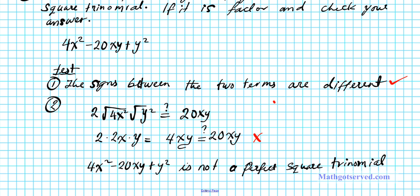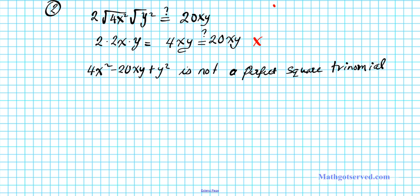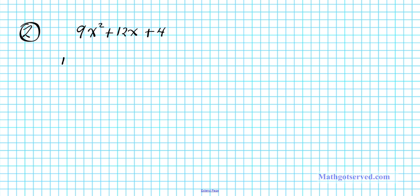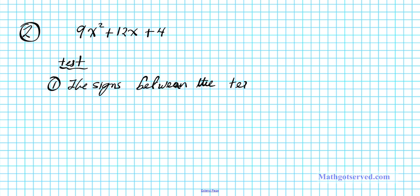Now let's take a look at another example, question number 2. What if we have the polynomial 9x squared plus 12x plus 4? Let's do the test to determine if it's a perfect square trinomial. Test number one — the signs between the terms are all positive. If the signs are all positive, or the signs are different, that passes the sign test for a perfect square trinomial.